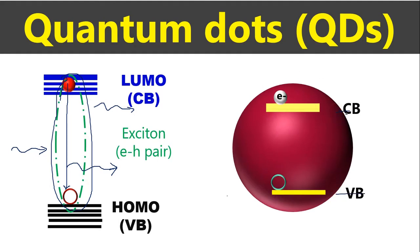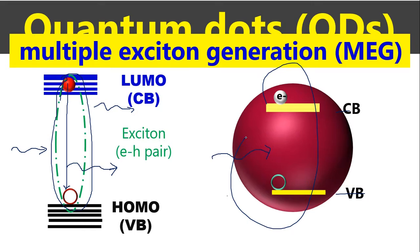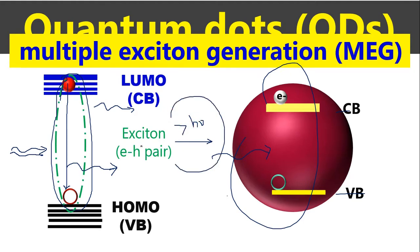There is one special thing in quantum dots called multiple exciton generation. When we shine UV light, it takes the electron from the ground state to a higher state — it becomes one exciton. But in quantum dots, when you hit with a high-energy photon, it will generate multiple excitons — not a single exciton. That process we call multiple exciton generation, also called multiplication. This is a special phenomenon that occurs in quantum dots.